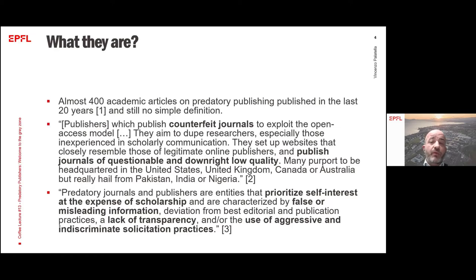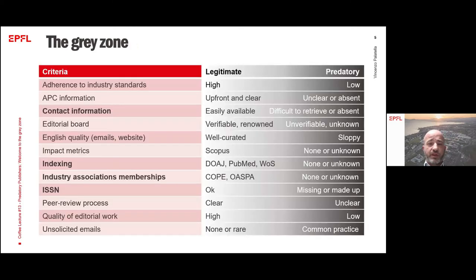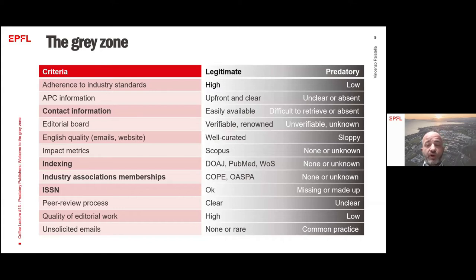It's truly difficult to define clear criteria to spot one of them. At best, we can be aware of a number of factors and raise our awareness when evaluating a journal we don't know. This grid presents some of the criteria we should pay attention to in order to make an informed decision. I just want to bring your attention to some of them, keeping in mind that some criteria — for example, the quality of the editorial process — can't really be verified before submitting an article. So while being 100% sure about the deceptive nature of a publisher is quite difficult, there are a few criteria that should raise a red flag and create a reasonable doubt that we should further investigate.